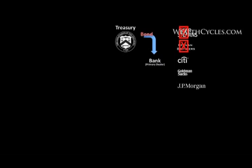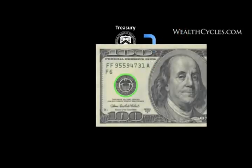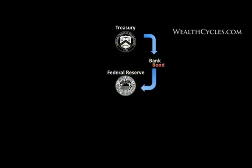Then the Federal Reserve, through something called open market operations, will show up and either drain liquidity from the system or add liquidity to the system, and they will buy some of those bonds. When they do, they write a check from a checkbook that has nothing in it, and currency springs into existence — base money, paper dollars.